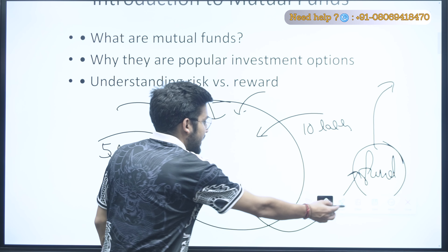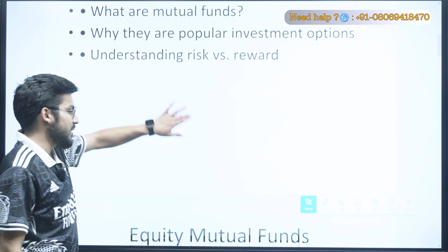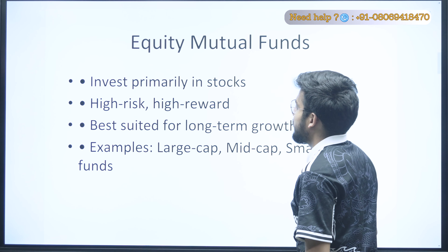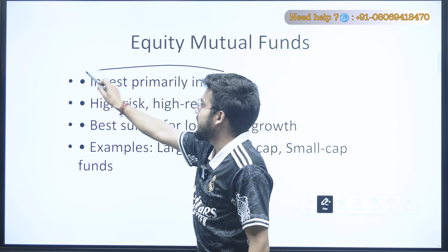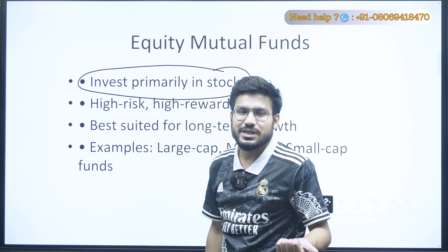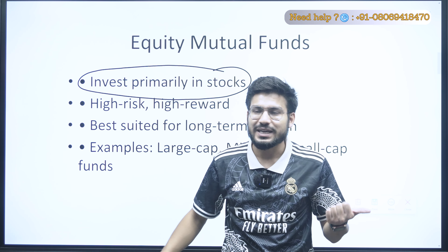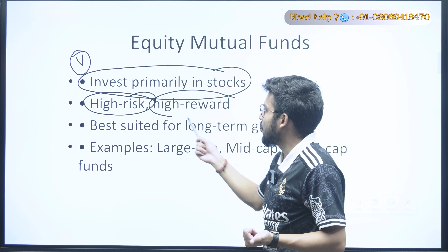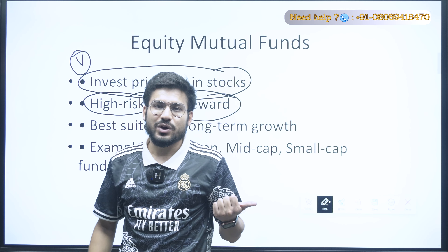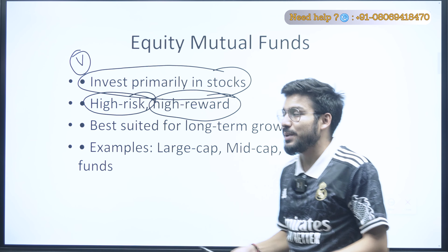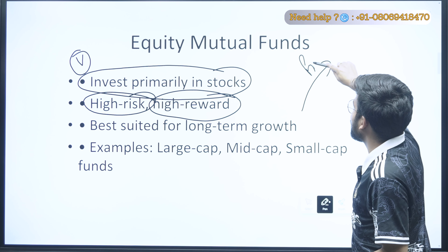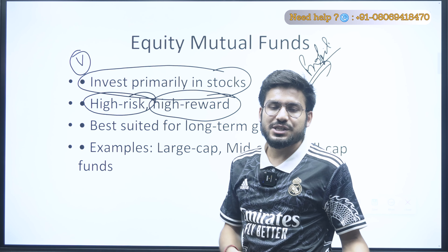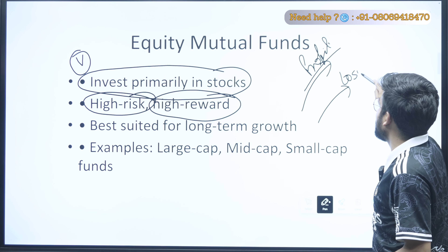A mutual fund is a pool of money in which various investors invest their money. For example, one investor invests 10 lakh, another invests 5 lakh, another invests 1 lakh rupees, and so on. This pool of money is then invested in a particular fund or sector. Whenever that fund makes a profit, you gain returns on your mutual funds.